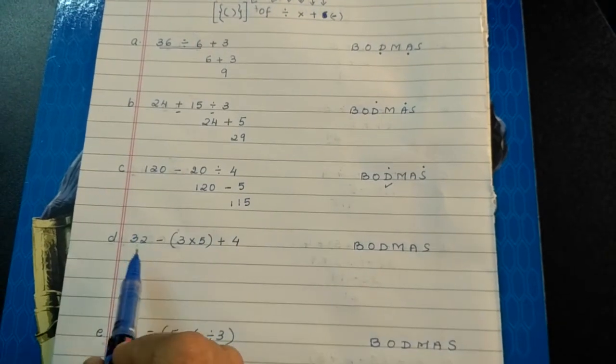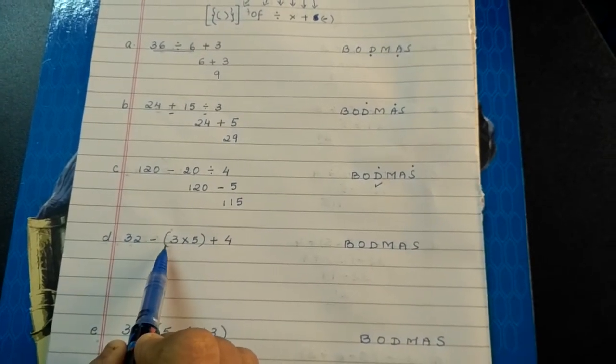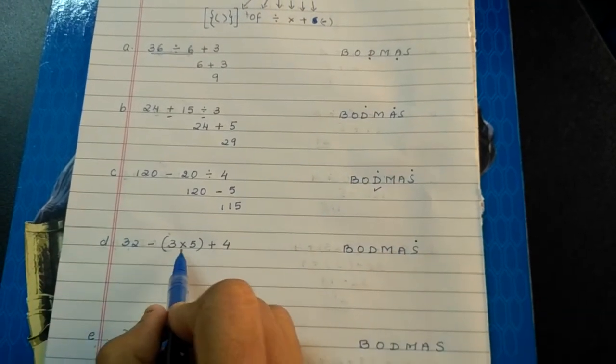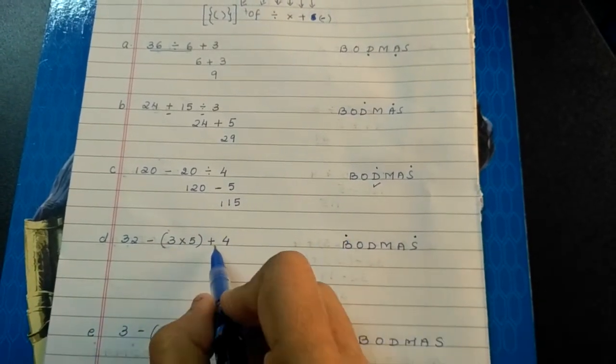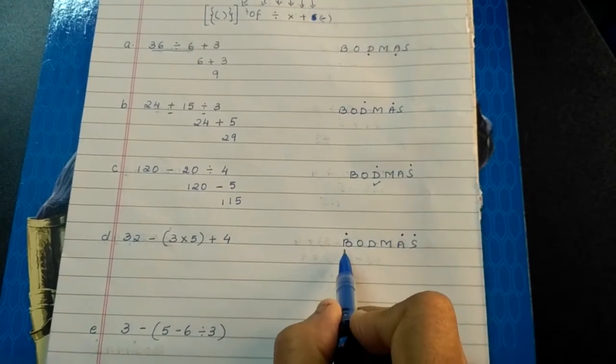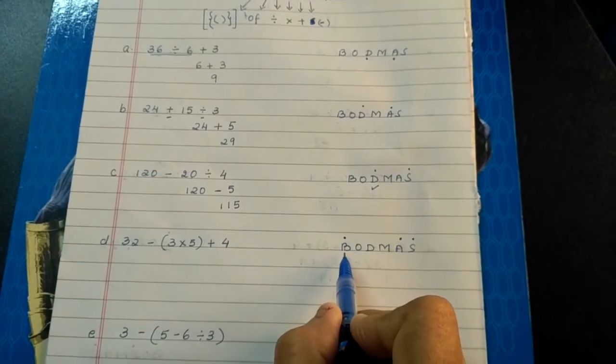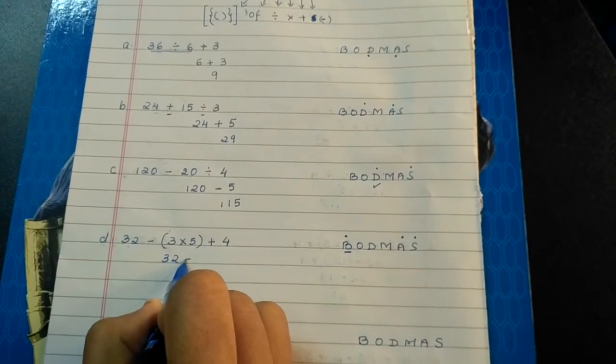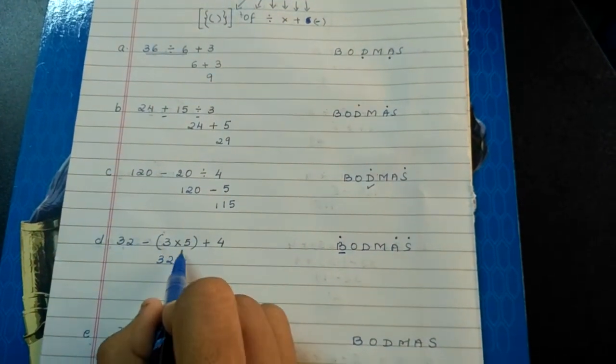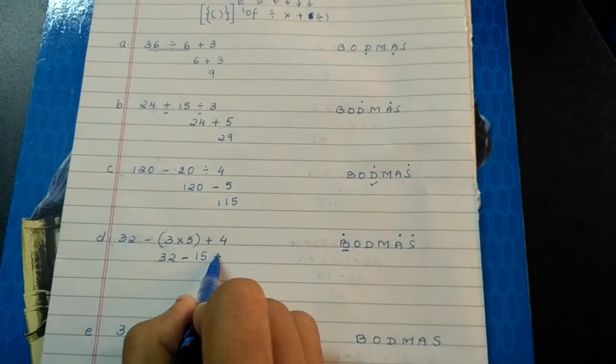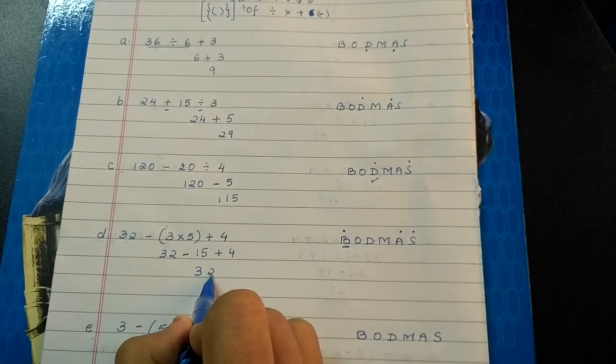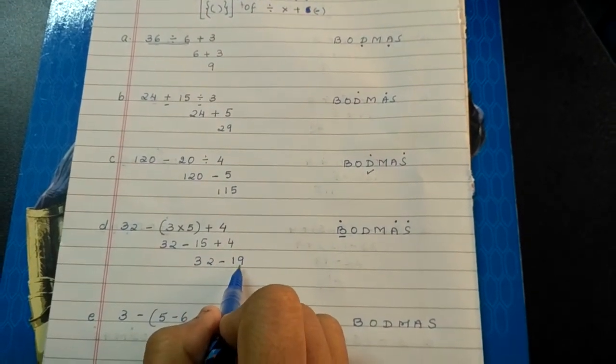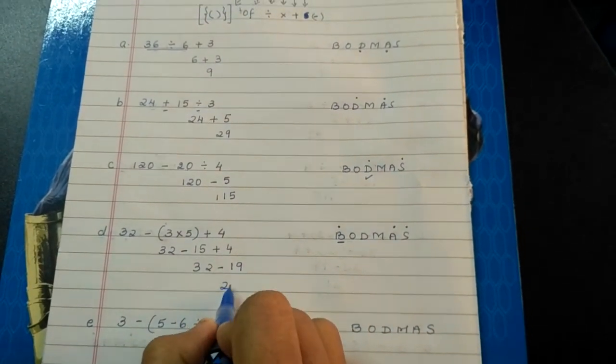Next sum, 32 minus brackets 3 into 5 plus 4. So here subtraction is involved, then brackets is involved, and then addition is involved. What arithmetic operation will you do first? Brackets. So 32 minus whatever is inside the bracket. 3 fives are 15 plus 4. 32 minus 15 plus 4 is 19. 32 minus 19 is 23.